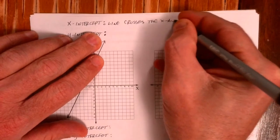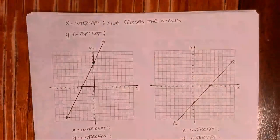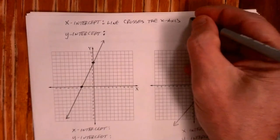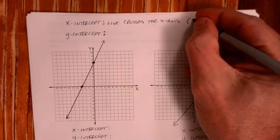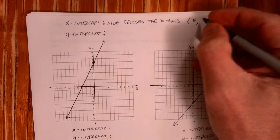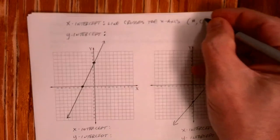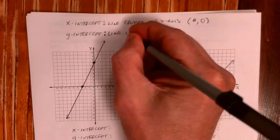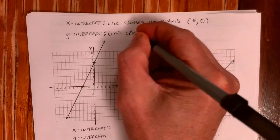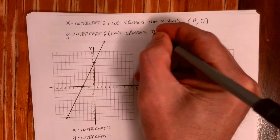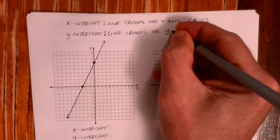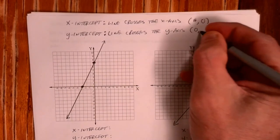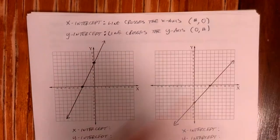The x-axis is the one that goes from left to right. It's where a line crosses it, and it's always in this form: a number, wherever it is, and then zero. The y-intercept is where a line crosses the y-axis, and that general form is always zero and a number. Notice there's a zero in each one of these.